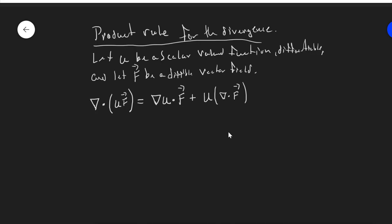This is a sort of strange parallel with the product rule: derivative of the first times the second — but here 'derivative of the first' is really the gradient of u, and the multiplication is the dot product with F — plus the first (the scalar function u) times the 'derivative of the second,' which here is the divergence of F. It has the same algebraic form, but the derivative must be interpreted differently in each term.